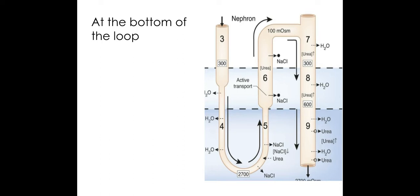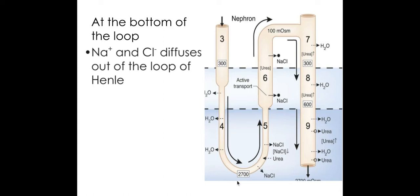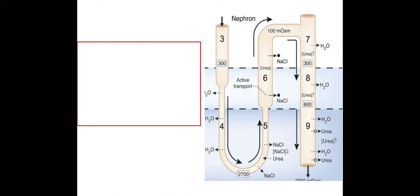At the bottom of the loop of Henle, because a lot of water has already been removed, there is a high concentration of sodium and chloride ions inside the loop. At this point, sodium and chloride ions diffuse out of the loop of Henle, which causes the water potential of the surrounding tissue to decrease further — which is why, as you go down the medulla, the water potential decreases further and further.